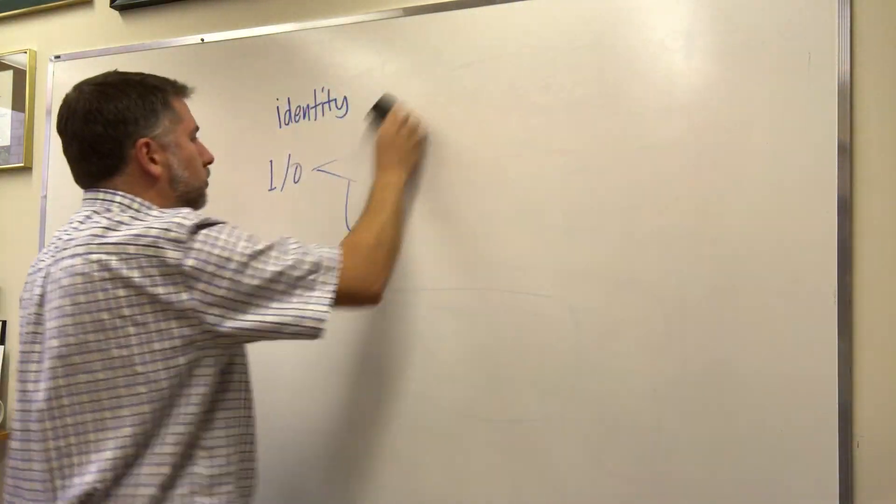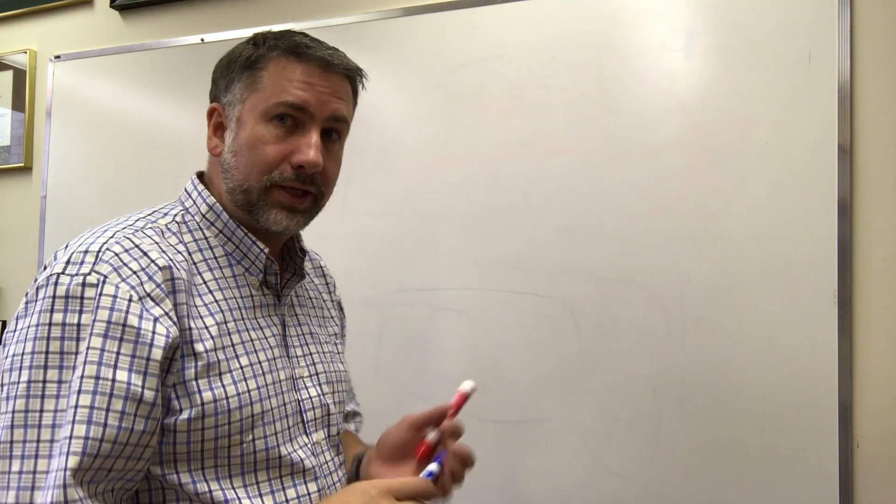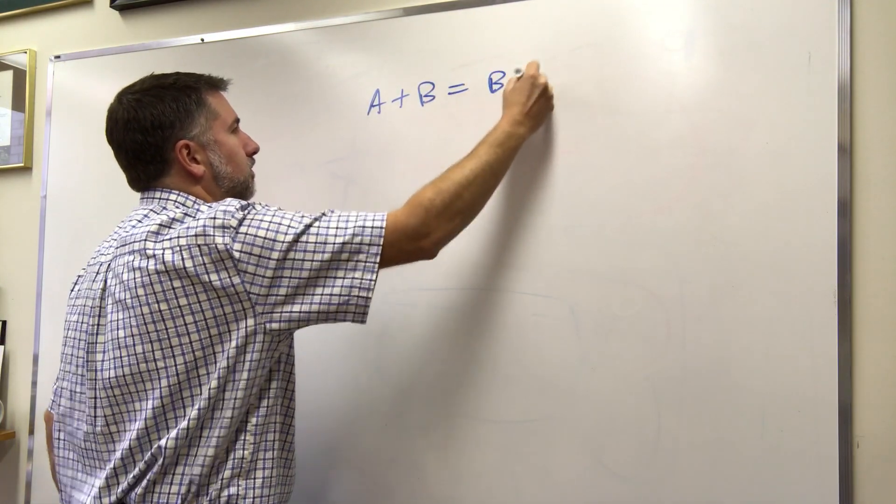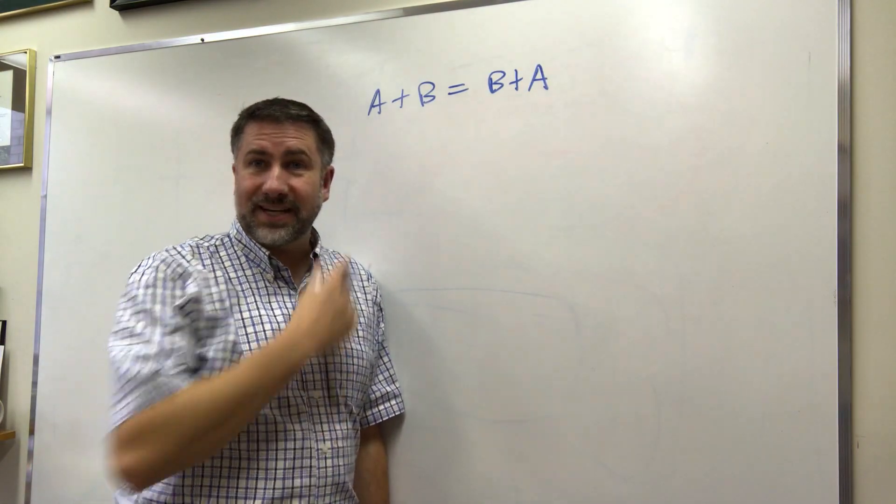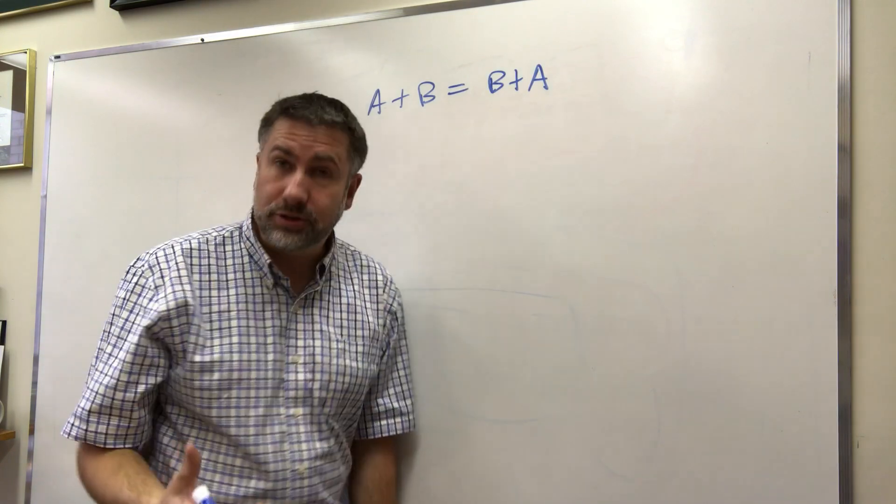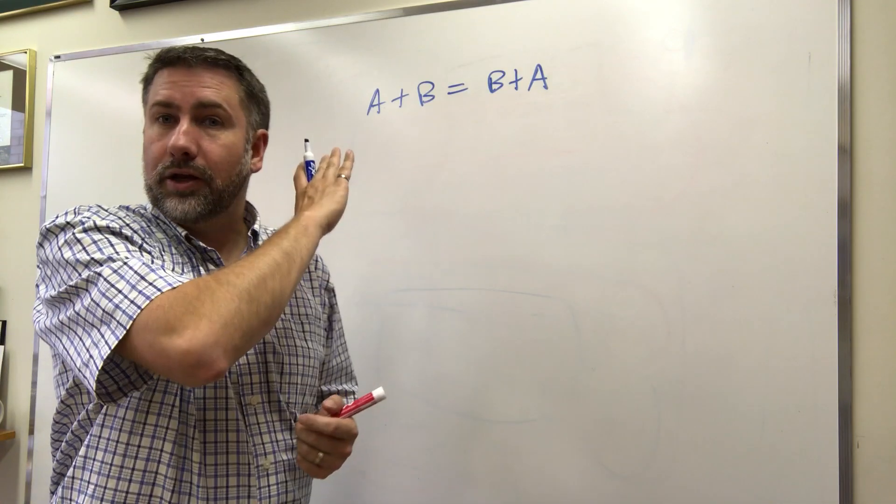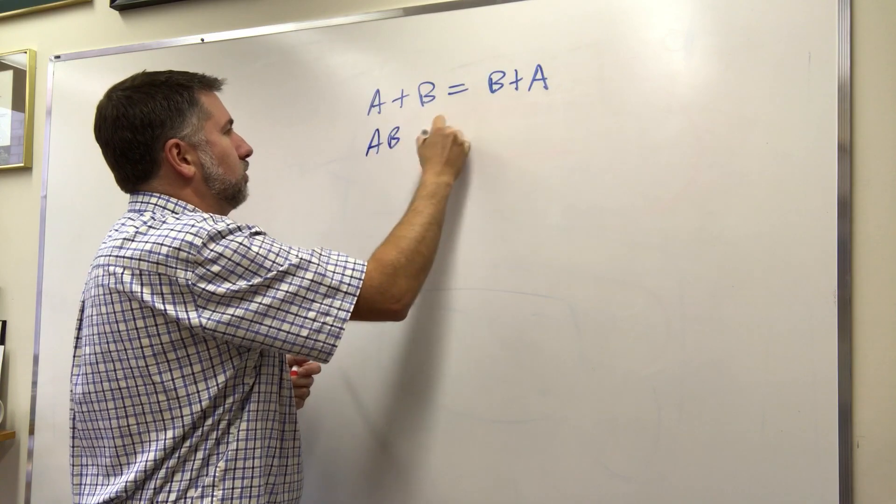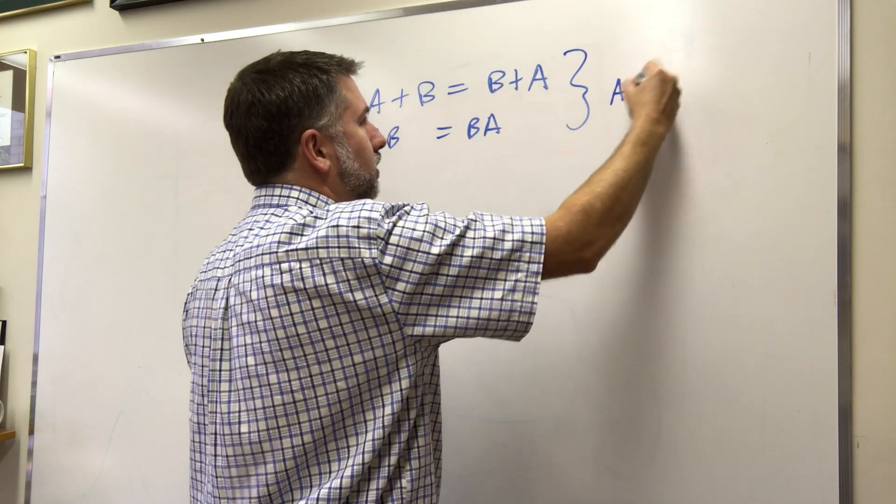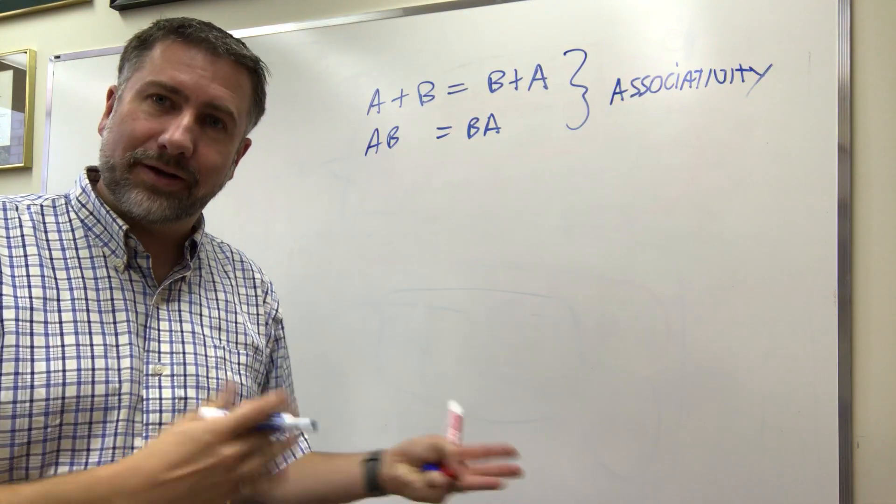Some of the other rules from our traditional algebra are also going to flow through into our binary algebra. Some of them might work in odd ways. Here's one. A plus B equals B plus A. So this means that it doesn't matter which direction you do an addition in. And that's called associativity. And that holds true for traditional algebra and for our Boolean binary algebra in OR and AND. So AB equals BA. That is also true. And you can prove that to yourself if you want to.